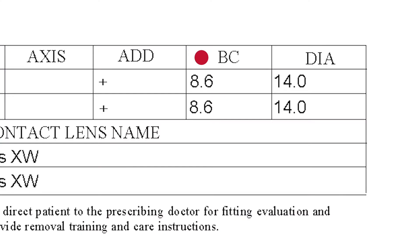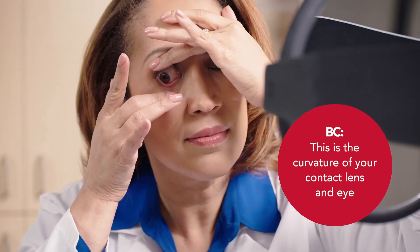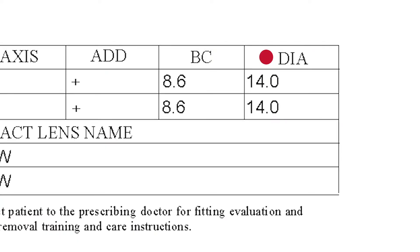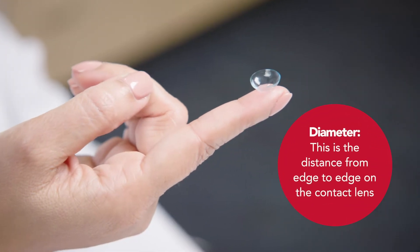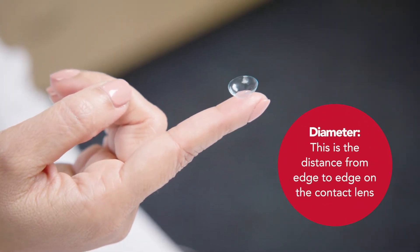Base Curve, or BC, is the curvature of the contact lens. The number fits the curvature of your eye, measured in millimeters. Diameter, or DIA, is the distance from edge to edge of the lens, also measured in millimeters, and it determines how your lens fits on your eye.